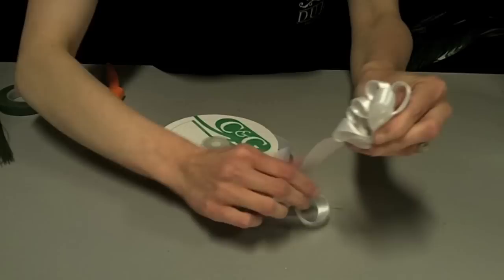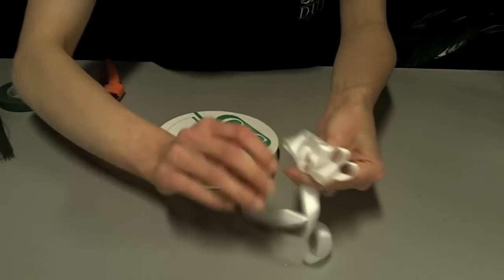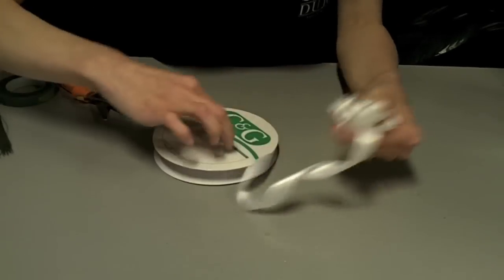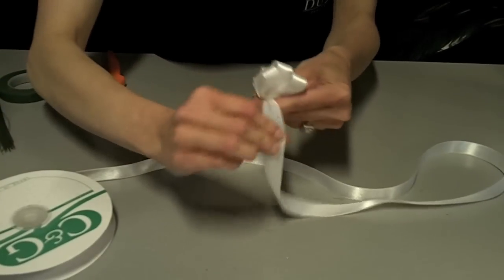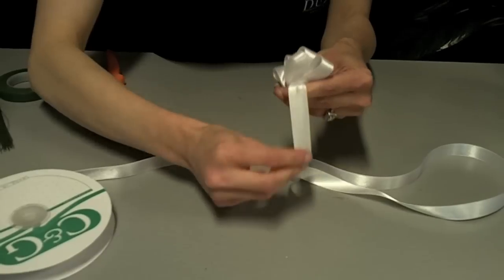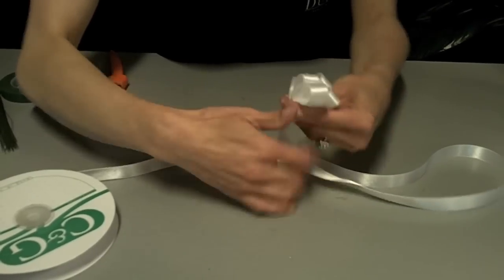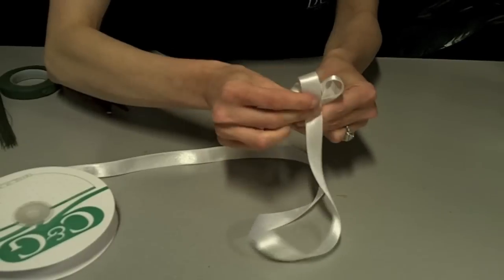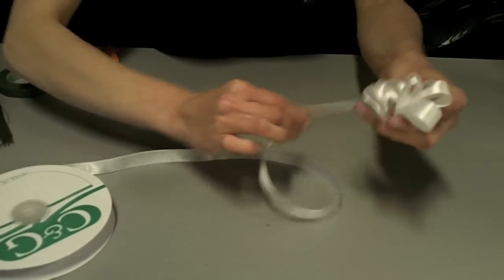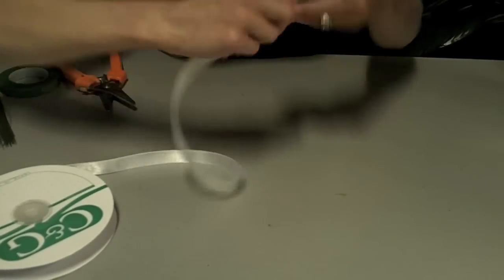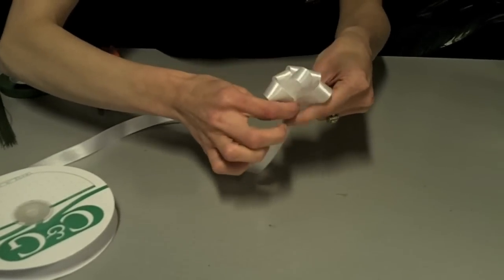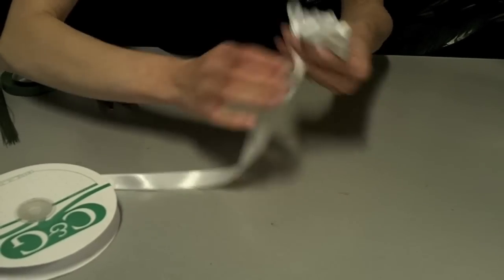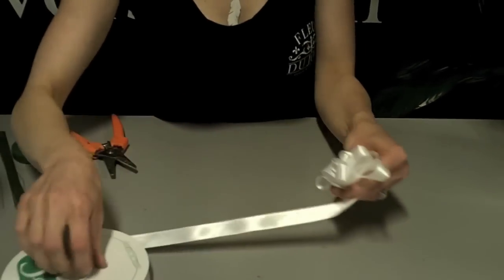Now for corsage bows, you make them somewhat elongated since they're going either on the body or the wrist. So you don't want it to be too fat and round. You want it to be more long and lean. Keep twisting and making loops. Like I said, once you master this, you can pretty much make any size bow with any kind of ribbon for any occasion.